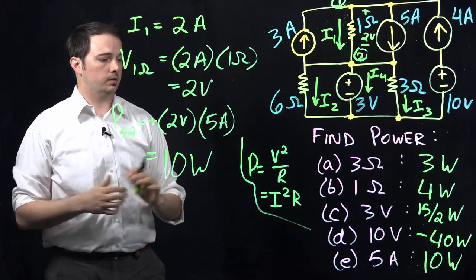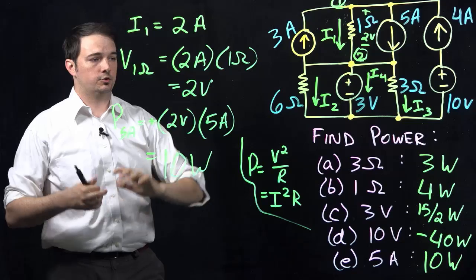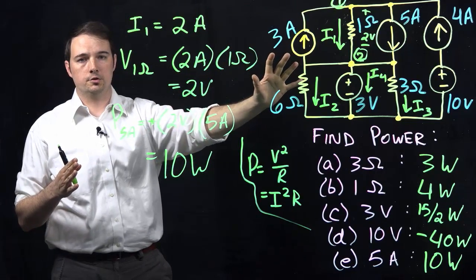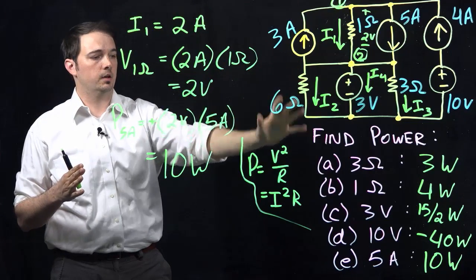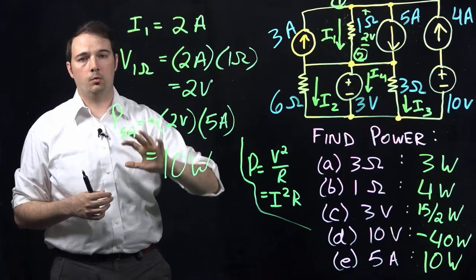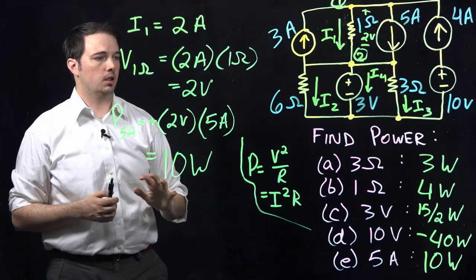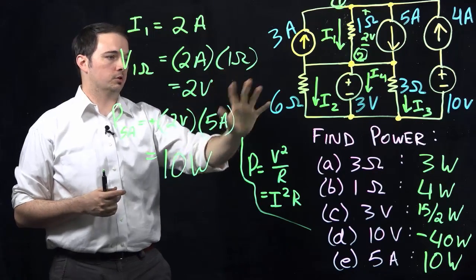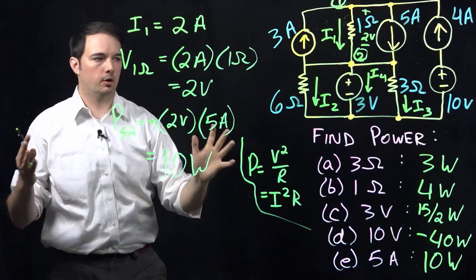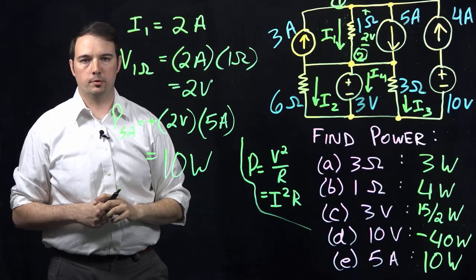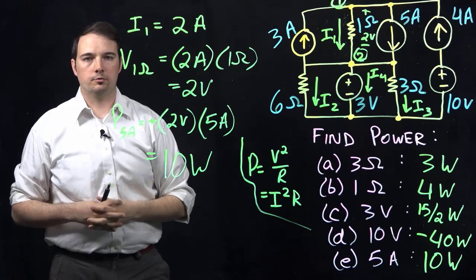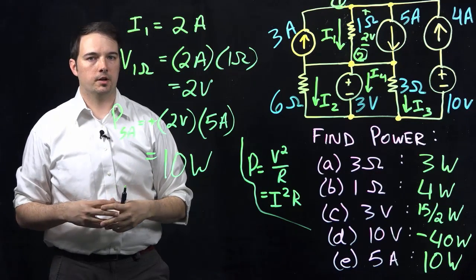By doing everything we've gone through, we've basically solved for all the currents and voltages in this circuit and gone a step further to figure out the power across the various elements. We didn't go through every single element, but all the rest should be pretty self-explanatory from there. Thank you very much — look forward to seeing you on the next video.